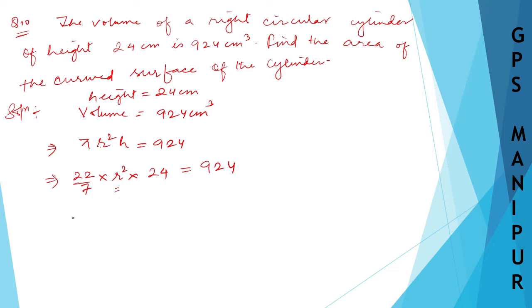I need to find the radius. So r²... Now let me rearrange: 924 × 7 divided by (24 × 22). Now I can cancel these terms.